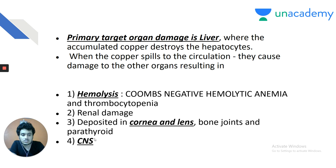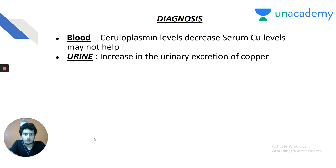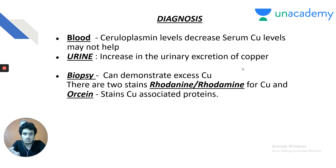Diagnosis of Wilson's disease: serum ceruloplasmin levels may be normal or slightly low — serum copper levels may not help. The most important diagnostic test is increased urinary excretion of copper. Liver biopsy can demonstrate excess copper using rhodamine stain (for copper) and orcein stain (for copper-associated proteins). However, biopsy is rarely done now.